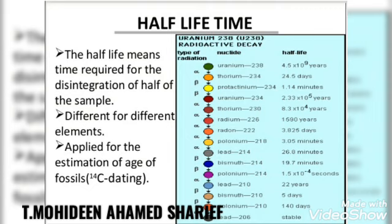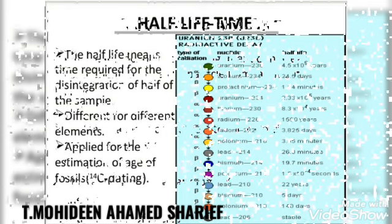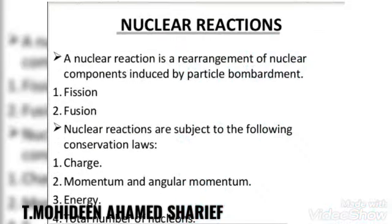The half-life period is different for different elements. For example, in the picture you can see that uranium, curium, radium, radon, polonium, lead, and bismuth have different half-life periods.